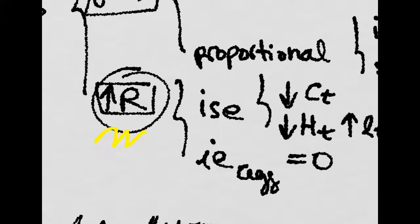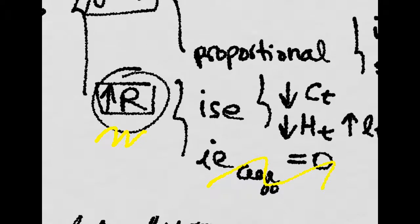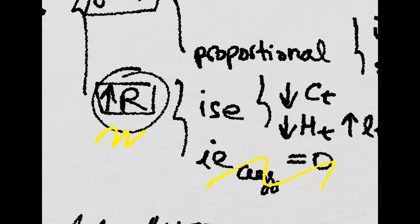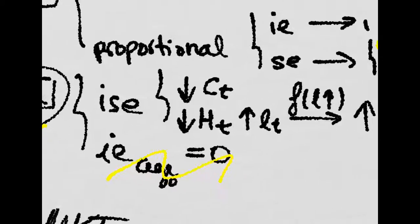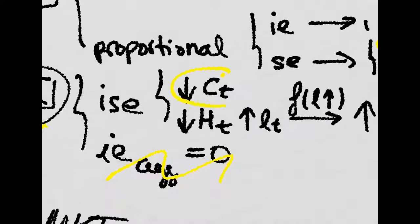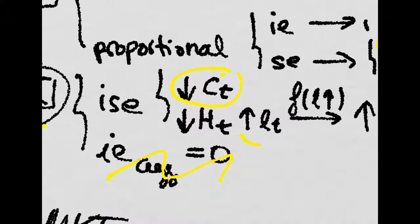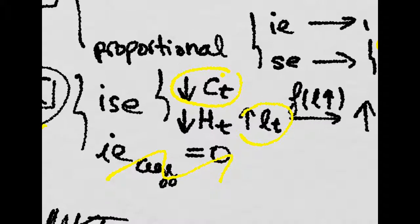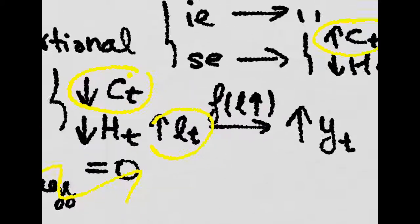Finally, there is an increase in the interest rate. There is no income effect in aggregate terms, and we have an intertemporal substitution effect by which present consumption decreases, and present labor increases because you want to work more now in order to save more.